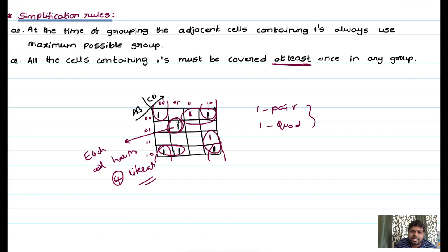If we can link cells to form a pair or a quad, we can reduce the literals. The literals are reduced by grouping pairs, quads, groups of eight, or groups of sixteen adjacent cells. This leads to a reduced number of literals, providing the minimized Boolean expression. That is the advantage. That's why all cells containing ones must be covered at least once in any group.